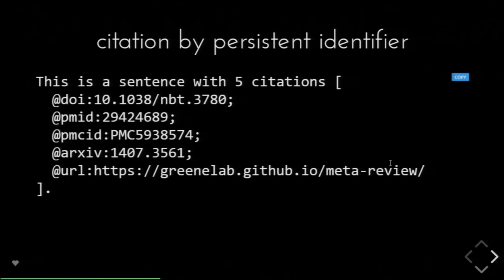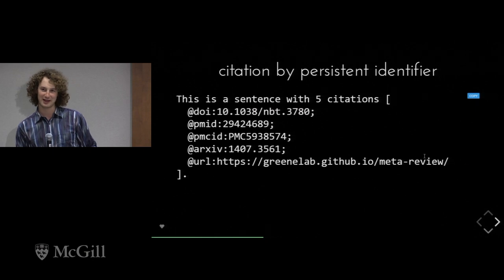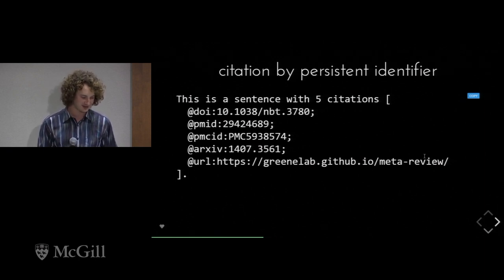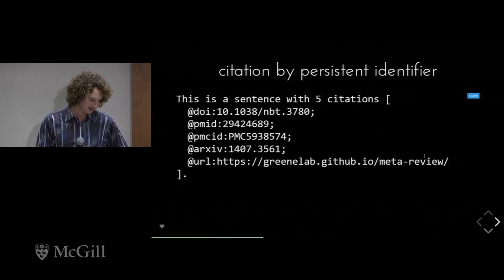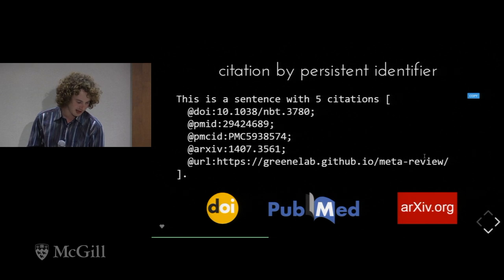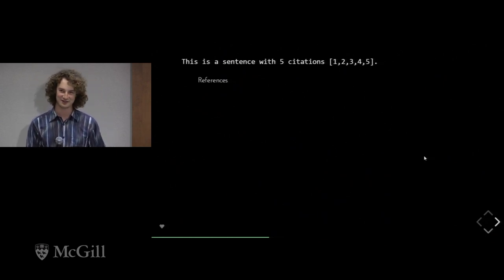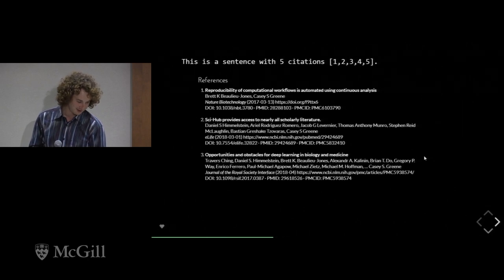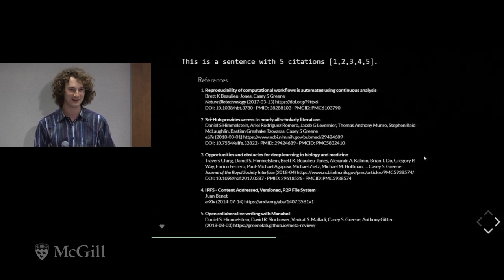We've spent a lot of time on the idea of citation by persistent identifier — rather than putting bibliographic details in a file and then into your authoring software, when you write you can just put an identifier to a paper. You would write a sentence in Manubot source with five citations: the first being a DOI, the second a PubMed ID, then a PubMed Central ID, an arXiv ID, and a URL. Manubot automatically gathers the metadata from different resources and renders it as a properly numbered bibliography — all without the user having to provide anything but the ID of the study.